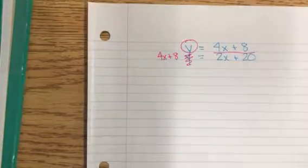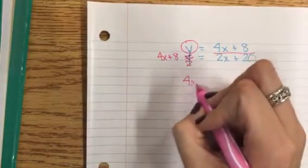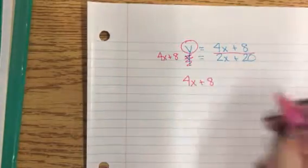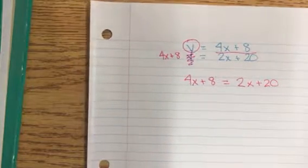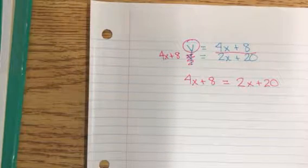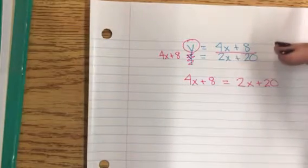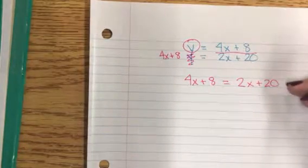Either way we end up with a statement that says 4x plus 8 equals 2x plus 20. Whether or not we knew anything about systems, there was still some information there that we could gather because these both equal y.